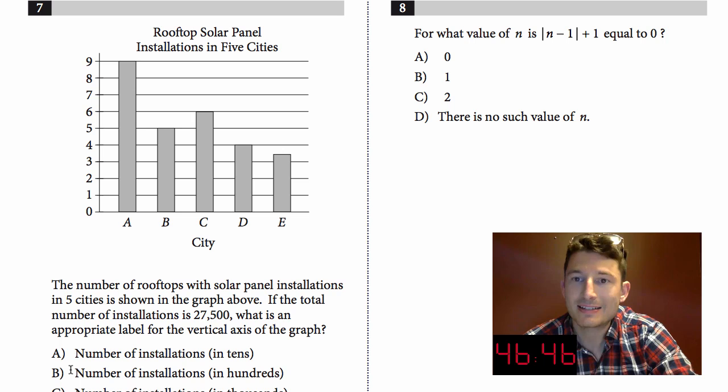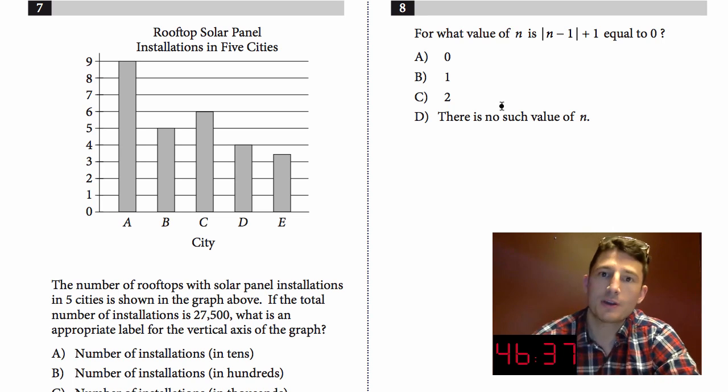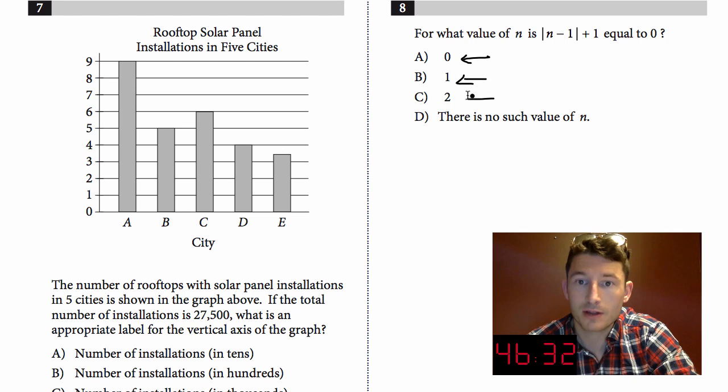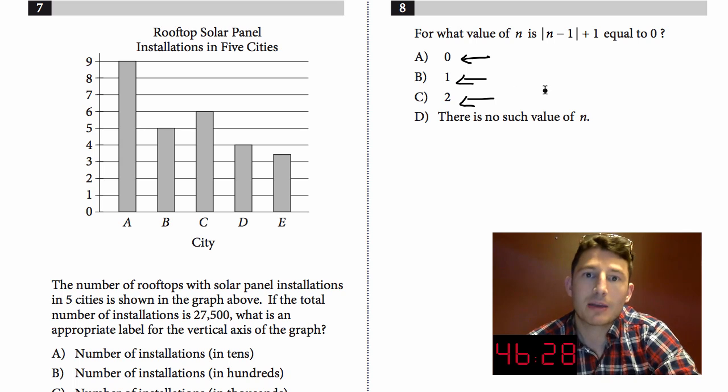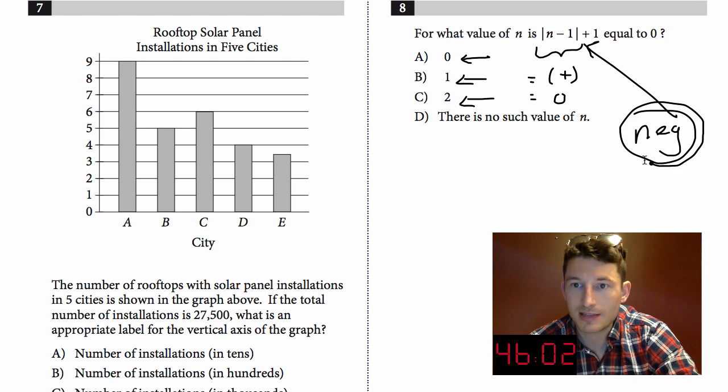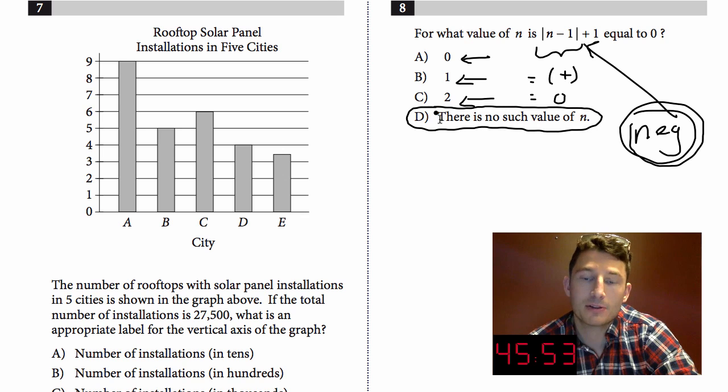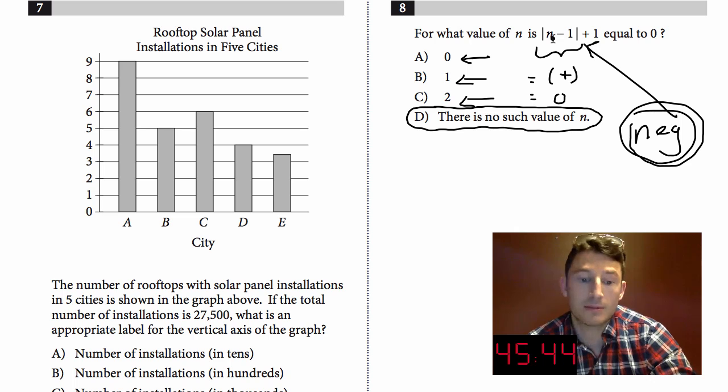Number eight: For what value of n is the absolute value of n minus one plus one equal to zero? Well there's two ways to do this. You could start going to your answer choices and just plugging in, and that works fine. The only thing I would say is, what happens when you've got an absolute value? The result is always going to be some positive number or zero. But you want n minus one and whatever comes out of here plus one to equal zero. So that means this stuff in there has to be negative. Is that possible? Will I ever get a negative? No. So there's no number that you can put in there to make that expression negative. If that didn't make sense, if you start picking numbers you could find out that none of those work and you have to go with D. Just keep in mind, it's an absolute value—you're never going to get a number that makes an absolute value negative.